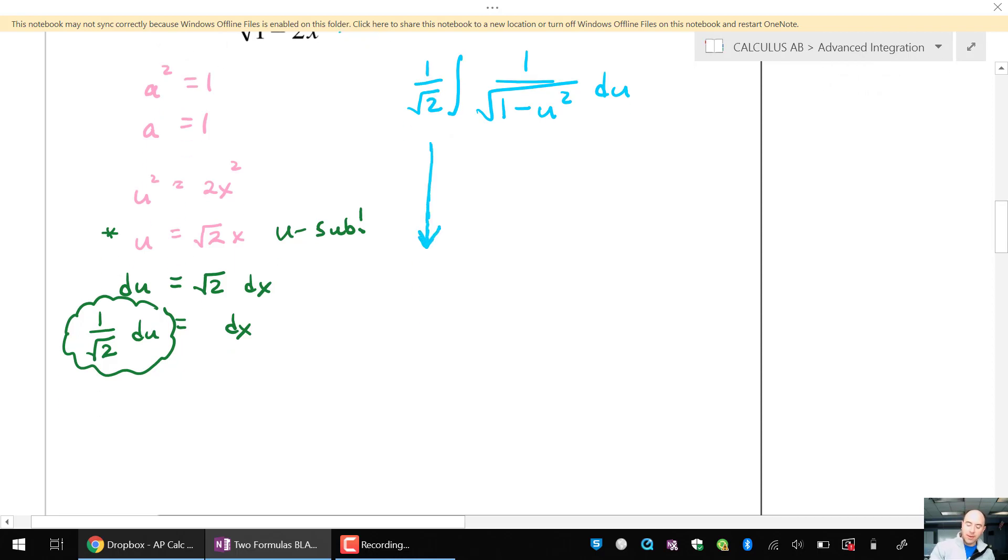So I'll just draw an arrow, carry that down, copy it. And then this integral is the arcsine formula. So arcsine of u over a, root 2x divided by 1, u over a, and then don't forget plus c. So all of that is the antiderivative. Again, it's u substitution that we have to make sure we catch so that we don't miss that 1 over root 2 piece in front of it.